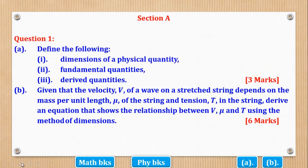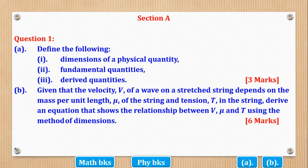We'll start with Question 1. Question 1 part A says: define the following — Roman 1, dimensions of a physical quantity; Roman 2, fundamental quantities; and Roman 3, derived quantities.